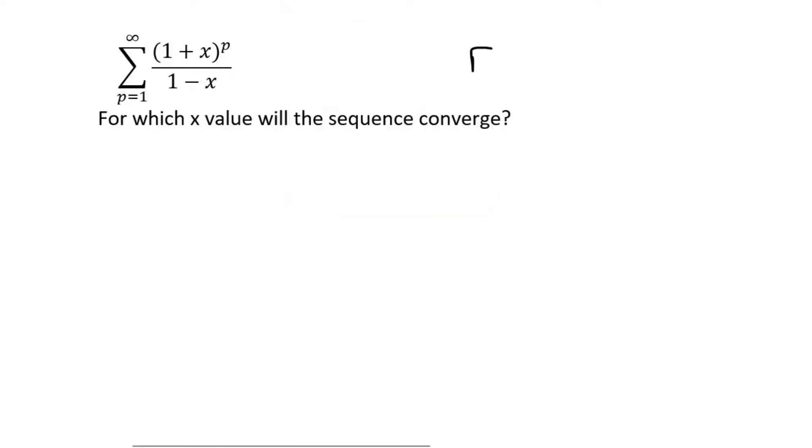A sequence converges when r, the ratio, is between minus 1 and 1. So we need to find r.